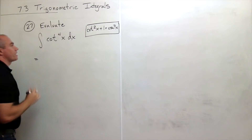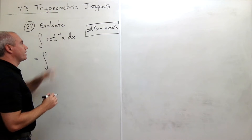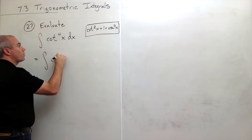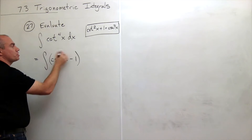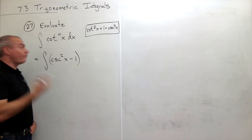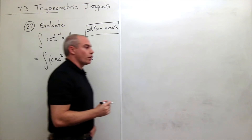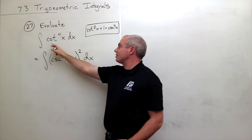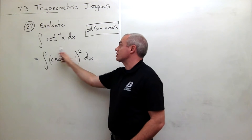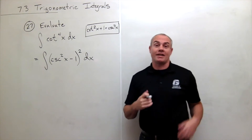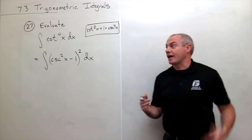So I could rewrite this as the integral of cosecant squared of x minus one — using that identity — but this is just cotangent of x quantity squared. I want it to the fourth, so I had better square it. So I can rewrite cotangent of x to the fourth as cosecant squared of x minus one, quantity squared. I just used an identity and we are on our way.